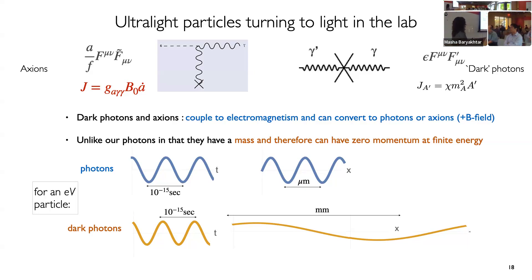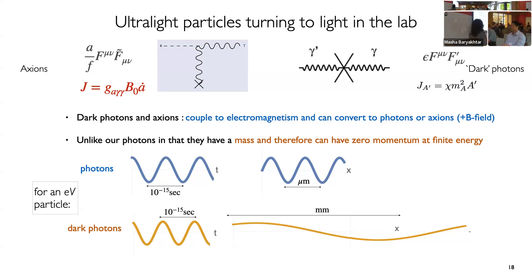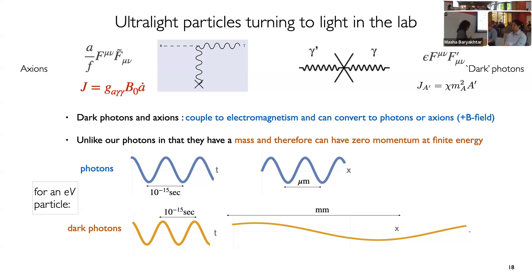If you prefer equations, you can think of having a new term that effectively acts as a background current in Maxwell's equations, proportional to B — some external magnetic field. Because axions are pseudoscalars, you need a background magnetic field to be able to convert them to photons. The coupling is Ga-gamma-gamma, with the magnitude of the axion field and the time derivative on that, which brings down the mass. For dark photons, the background current is proportional to the background density of dark photons. They have the same symmetry properties as photons, so you don't have to apply any external fields to get the conversion.